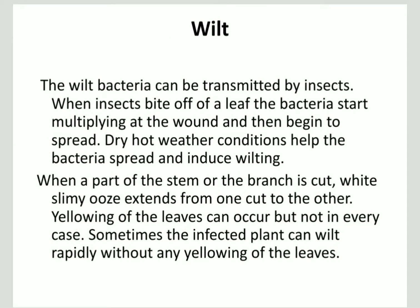Wilt: wilt bacteria can be transmitted by insects. When insects bite the leaf, the bacteria start multiplying at the wound and then begin to spread. Dry hot weather conditions help the bacteria spread and induce the wilting. When a part of the stem or branch is cut, white slimy ooze extends from one cut to the other. Yellowing of the leaves can occur, but not in every case. Sometimes the infected plant can wilt rapidly without any yellowing of the leaves.